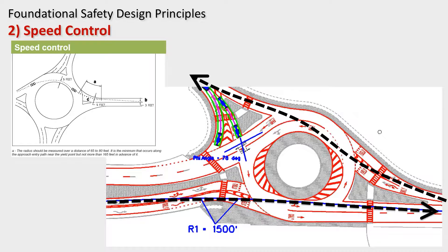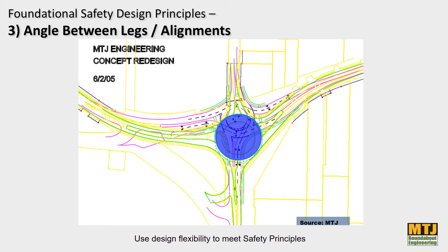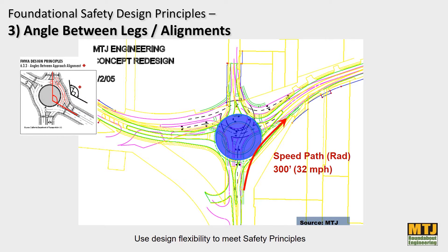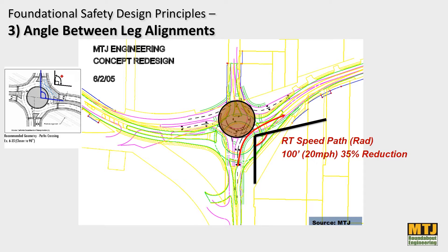Here's a project that combines both alignment angle between legs and speed control. This example has a skewed angle much greater than 90 degrees, which results in a very fast right-turn speed — particularly problematic for pedestrian crossings. Here's how we use design flexibility with roundabout design. We still have to adhere to the design principles for safety. It's a smaller ICD — the ICD is an outcome, not something you start with and stick to. Using that flexibility, we're able to square up the angle, achieve a slower speed path, and improve pedestrian safety.